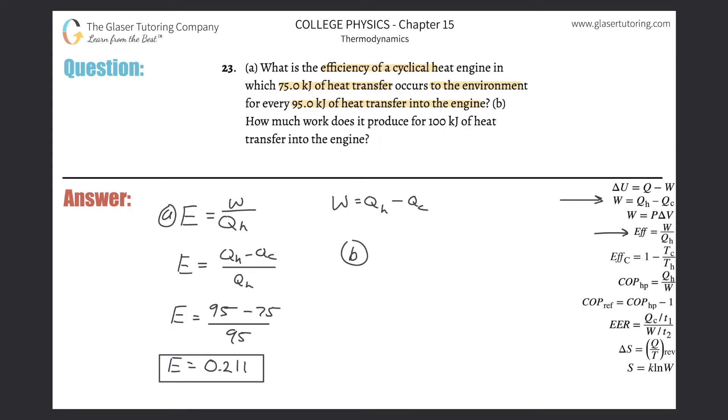And then how about letter B? How much work does it produce from 100 kilojoules of heat transfer into the engine? So it sounds like I can use this formula again. Efficiency is equal to work divided by the heat put into the engine.